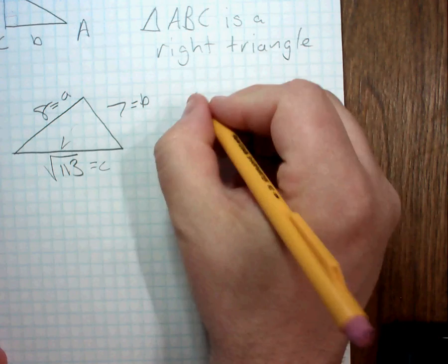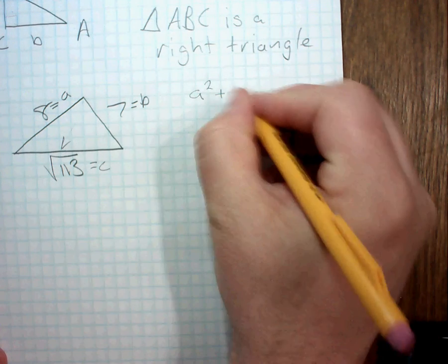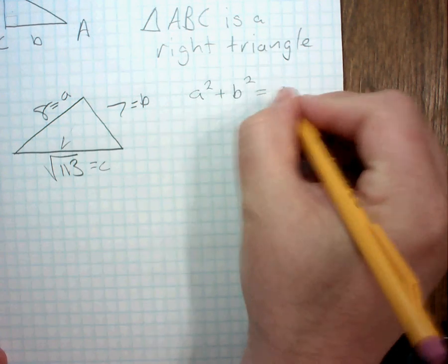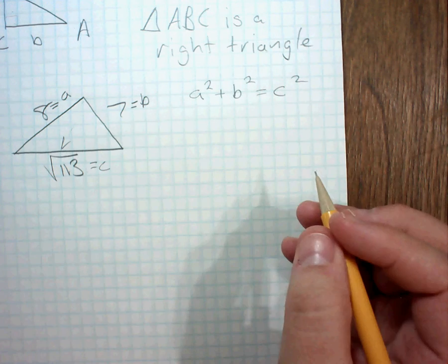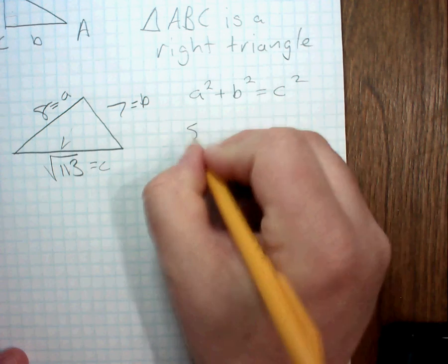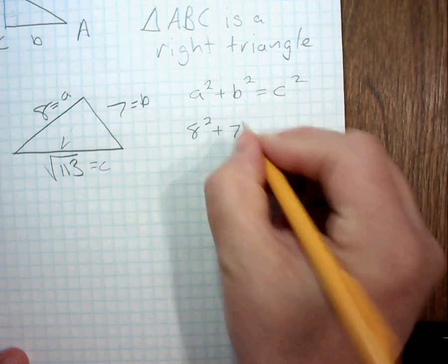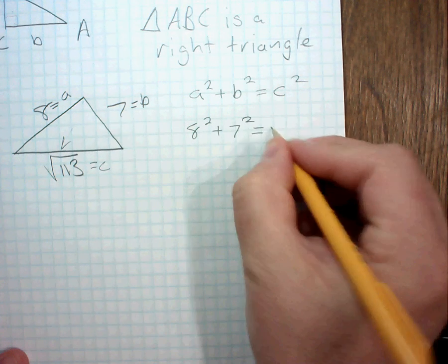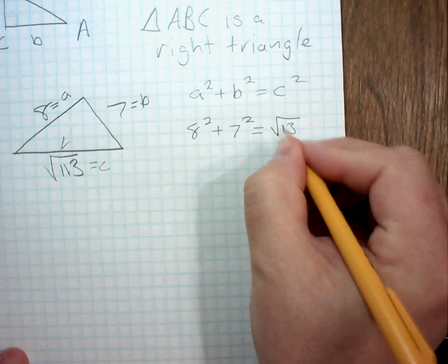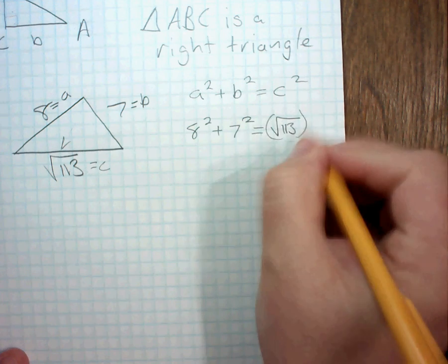Then, if a squared plus b squared does, in fact, equal c squared, then I have a right triangle. So, I'm going to say 8 squared plus 7 squared should equal the square root of 113, all that squared.